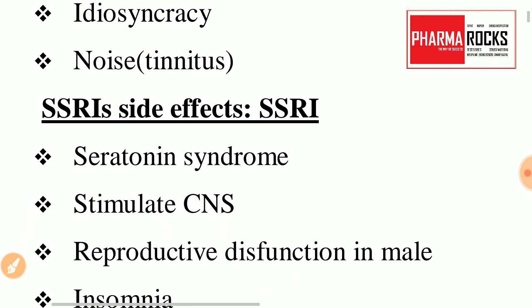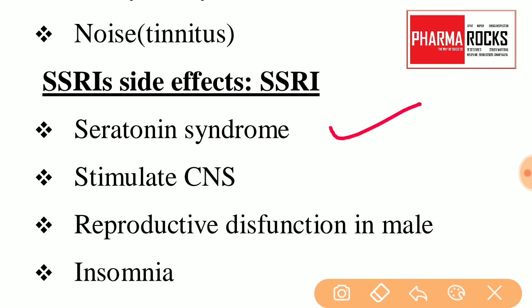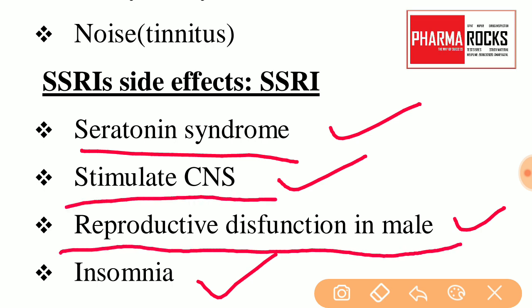For SSRI — selective serotonin reuptake inhibitors — the mnemonic is SSRI itself. S — serotonin syndrome, S — stimulates CNS, R — reproductive dysfunction in a male, I — insomnia. So this trick for SSRI side effects is also easily remembered.